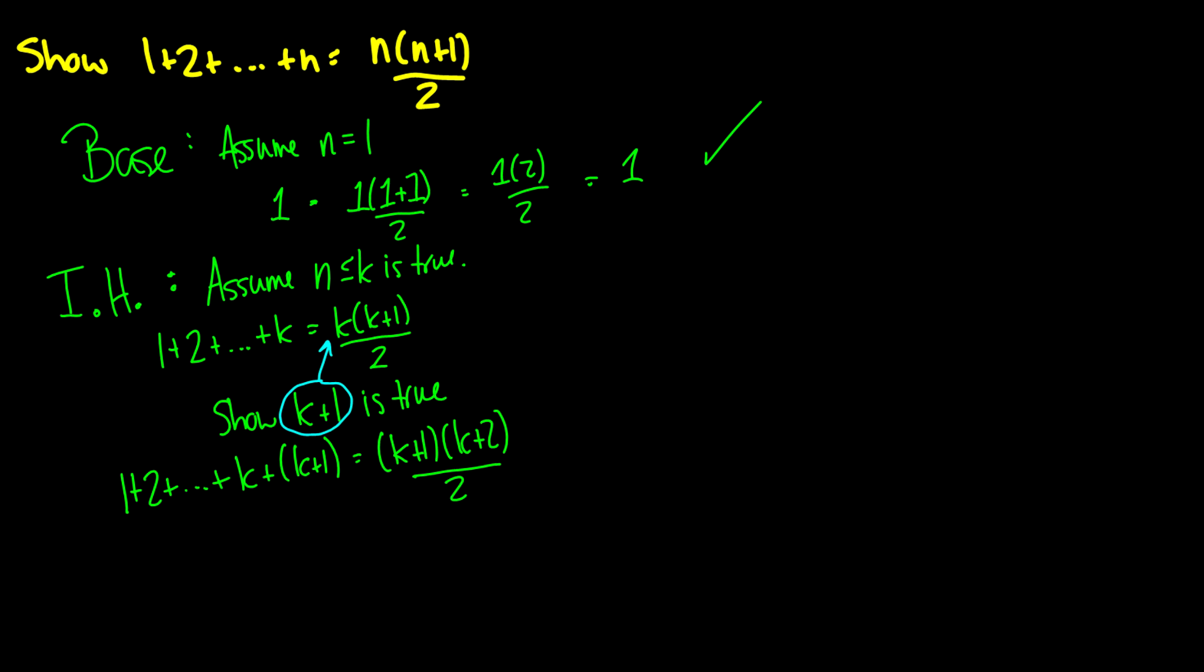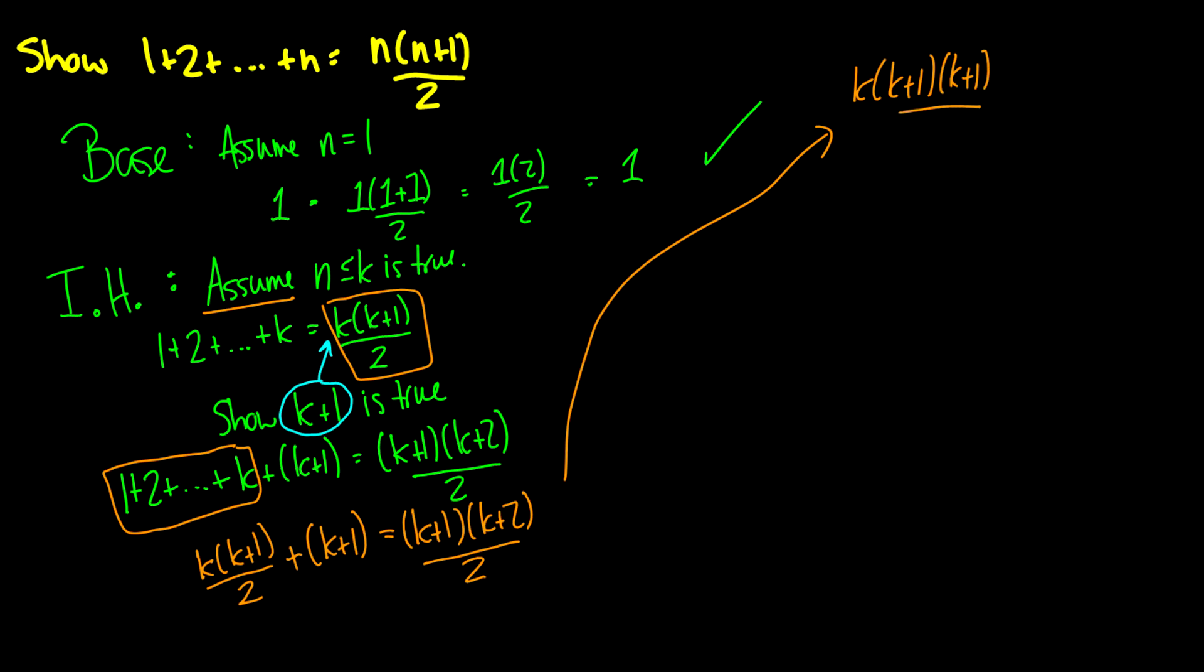Okay, so where do you go from here? Well, the assumption is the most important part of a good inductive hypothesis. Since what we have here is that this part right here, this 1 plus 2 plus all the way up to k is equal to k times k plus 1 over 2. This is part of our assumption. So what we can do is we can plug this in. So we have k times k plus 1 over 2 divided by 2. We can just add k plus 1 and now we just need to show that this equals k plus 1 times k plus 2 divided by 2.